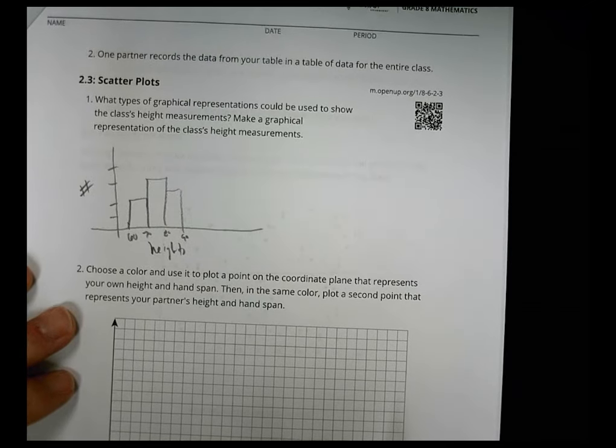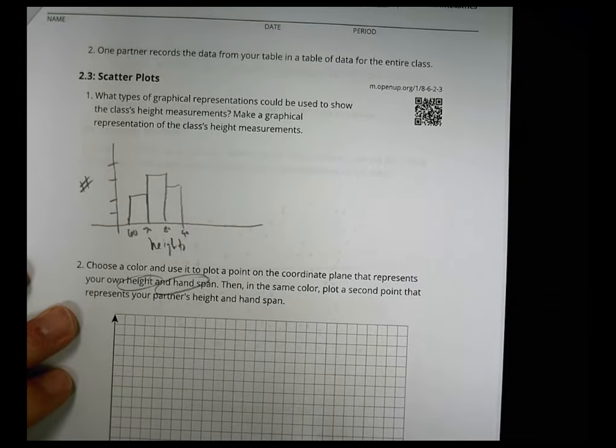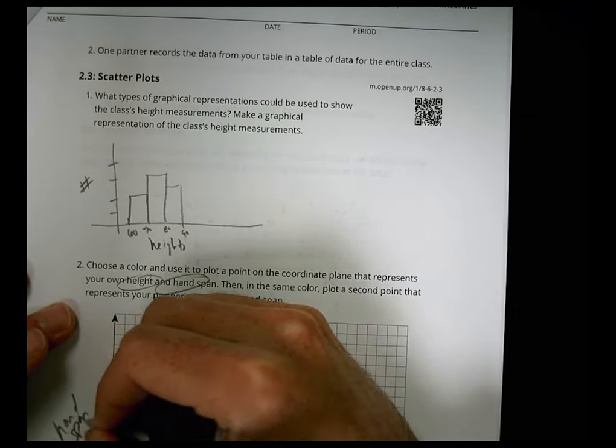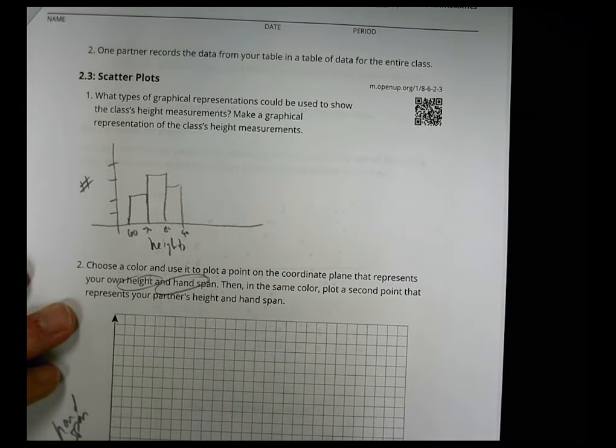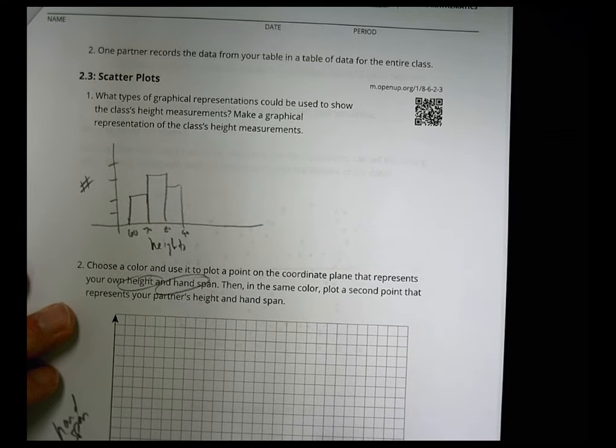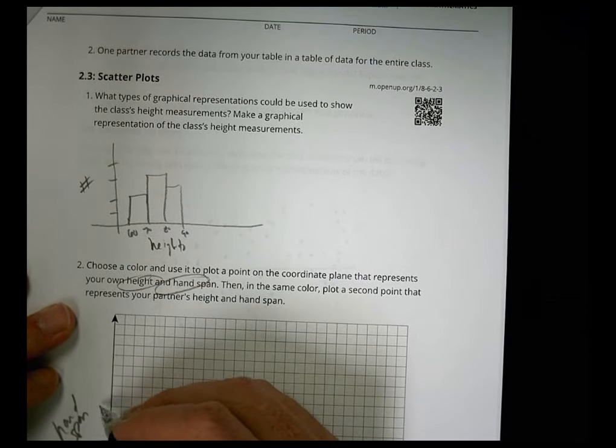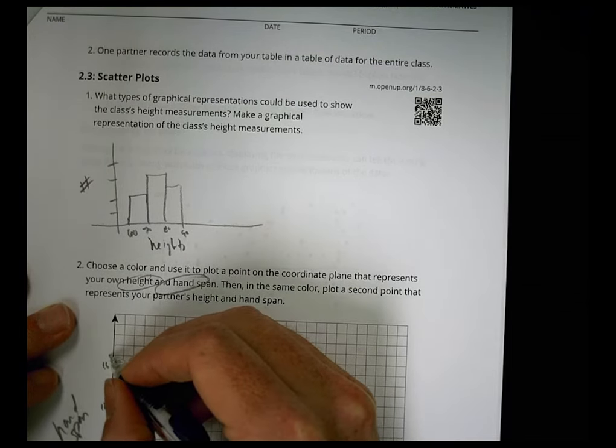Then it says in part two, choose a color and use it to plot a point on the coordinate plane that represents your own height and hand span. So if you did the height down here and you did the hand span on this side, you'd have to figure out how many squares you have to work with and how do you want to count these out. I chose to count them out by tens. So I have 10, 20, 30, 40, 50, 60, 70, 80, 90, 100, 110, 120, 130. And for the hand spans, I just counted by ones. 1, 2, 3, 4, 5, 6, 7, 8, 9, 10, 11, 12, 13, 14, 15, 16, 17, 18, 19, 20.